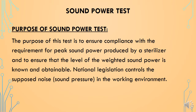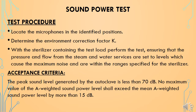The next qualification test is the sound power test. Its purpose is to ensure compliance with the requirement of peak sound power produced by the sterilizer and to ensure that the level of weighted sound power is known. National legislation controls the noise or sound pressure in the working environment. To perform the test, locate microphones in the identified locations, determine the environment correction factor K, and with the sterilizer containing the test load, perform the test ensuring that pressure and flow from steam and water services are set to levels causing maximum noise within the specified range.